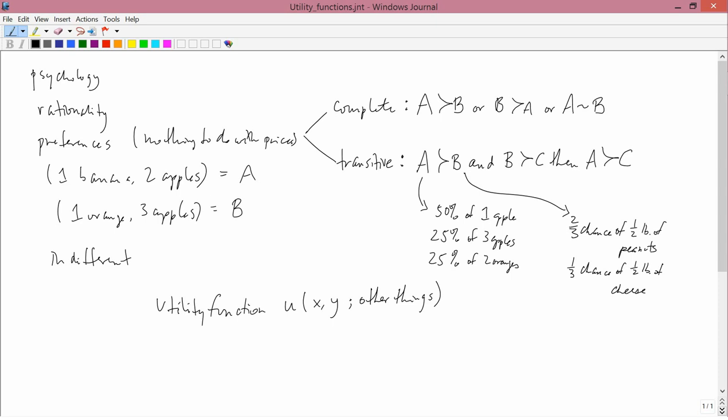We can imagine that utility is affected by things other than commodities, and that's why I wrote here these other things. All that we need to be able to do is hold those other things constant while the commodities are changing. If that can be done, in other words, if we can change X or change Y and hold these other things fixed, then we can simplify the utility function, just writing U of X and Y, and assume that when things are going on with X and Y, the other things are being held fixed.